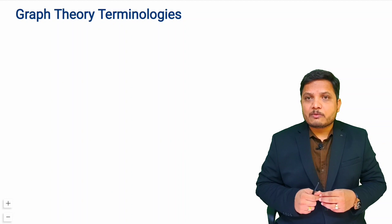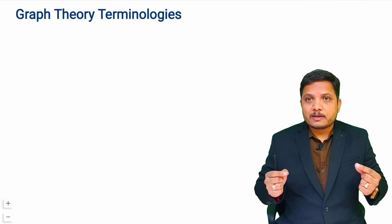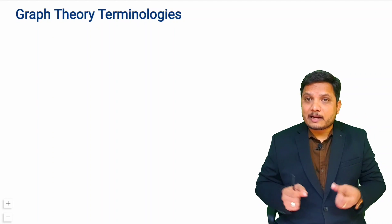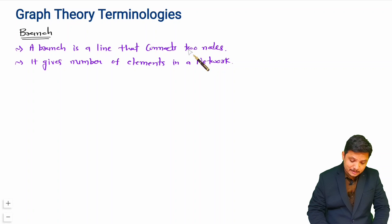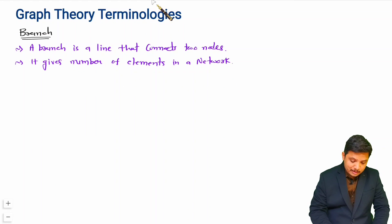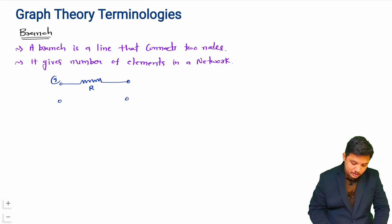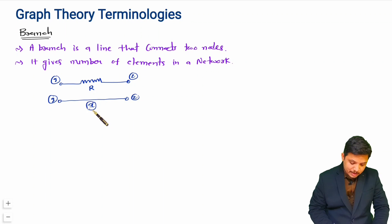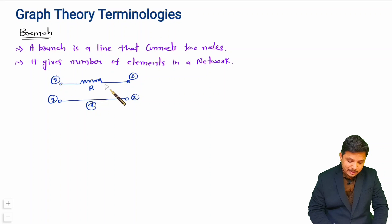Let us start with branch first. A branch explains the connection between two nodes and indicates how many objects are present in the circuit. A branch is a line that connects two nodes and gives the number of elements present in the network. For example, if you have a resistor represented as a branch, then node one and node two are connected by branch A. In graph theory, we represent resistors, inductors, and capacitors as elements in the interconnection of a graph.